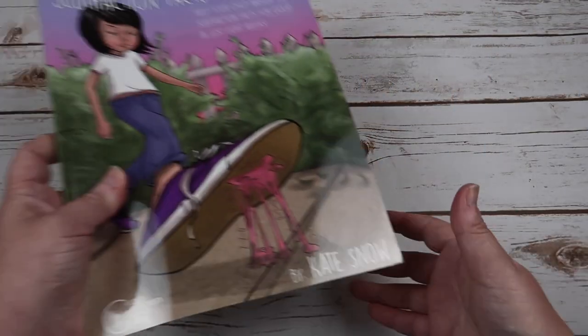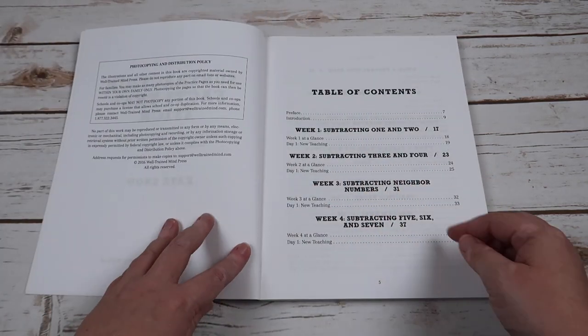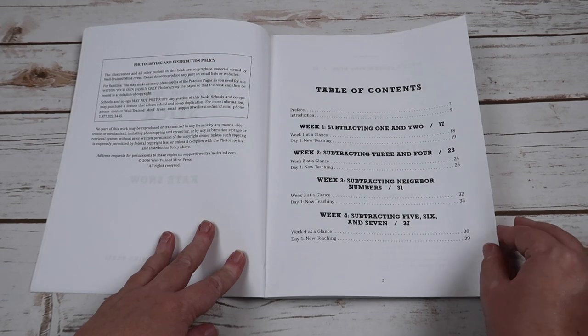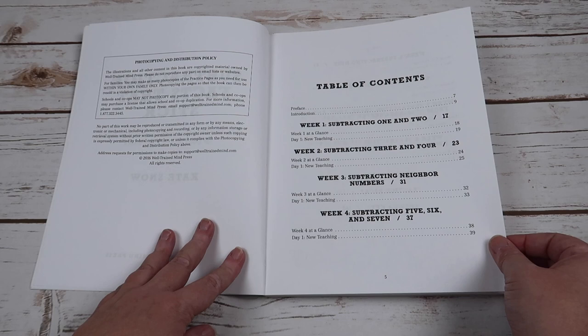So that's going to be by week. So week one, you're going to be subtracting one and two. Week two, you're going to be subtracting three and four. Week three, you're going to do subtracting neighbor numbers. Week four is subtracting five, six, and seven.